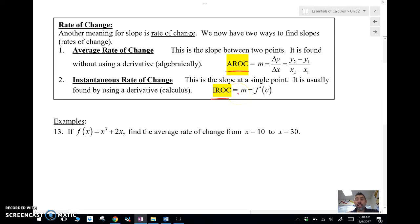Now, the average rate of change is the slope between two points. It's what you've already done. You've been doing for a long time in math. You're looking for the slope between two points.